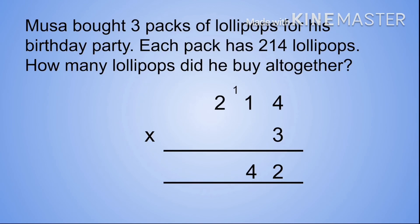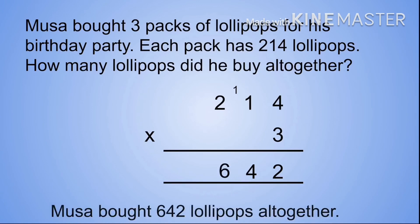Our last step: we need to times our multiplier 3 by our hundreds digit, which is 2. Therefore 2 times 3 gives us 6. So how many lollipops did he buy altogether? Musa bought 642 lollipops altogether.